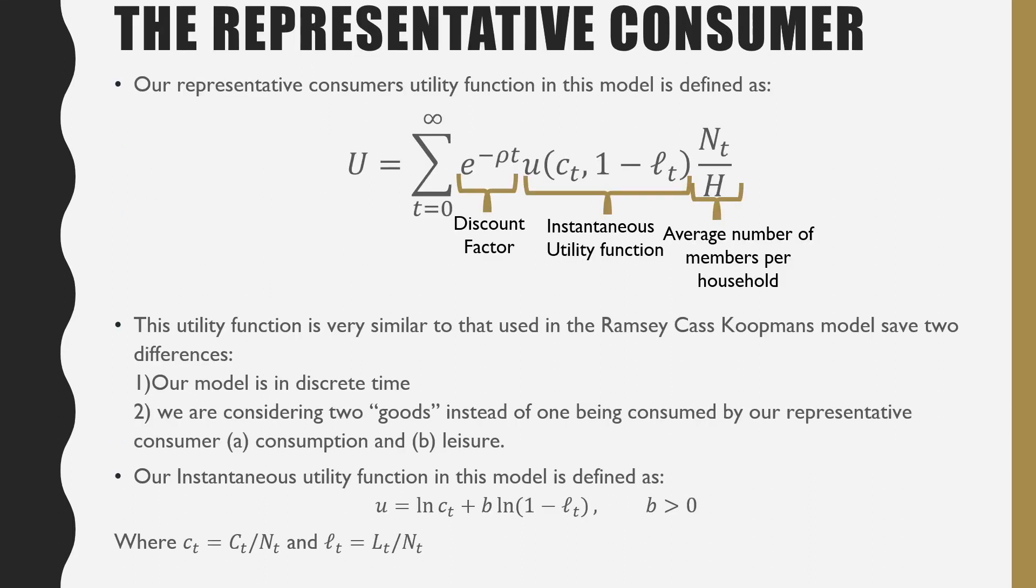Our representative consumer's utility function in this model is defined as the following. This utility function is very similar to that used in the Ramsey-Cass-Koopmans model, save for two differences. The first one is that our model is measured in discrete time, and the second one is that we'll be considering two goods instead of one being consumed by our representative consumer. These goods are consumption and leisure.